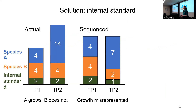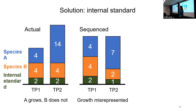Fortunately, there is a fairly simple solution: use internal standards in your sequencing efforts. Here we have species A and species B — one is growing, the other remains the same abundance throughout two time points. To these samples, we add the same amount of an internal standard — a known DNA sequence we can track throughout the sequencing process. When we sequence, things become wonky, including the internal standard, but its counts still reflect the same amount of DNA. So we can use that to correct the abundances of our unknown species.